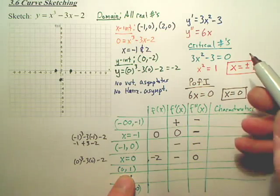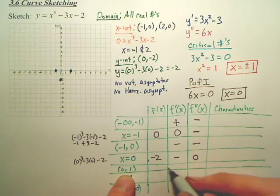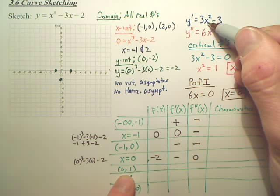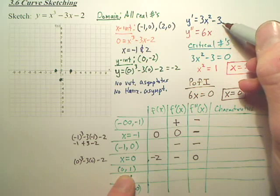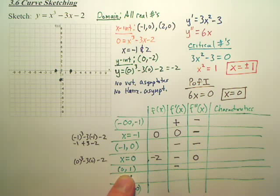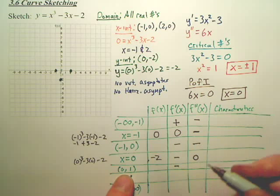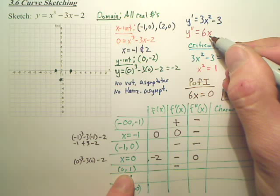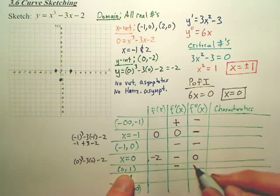So I'm going to take one-half, plug it into the first derivative. One-half will give me one-fourth, three-fourths minus—can you see how that's going to be negative? Is that correct? Plug one-half into this, and what do you get? Positive three. So that's positive.